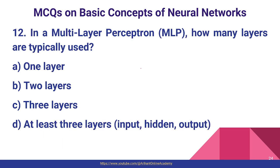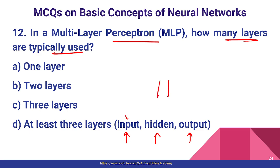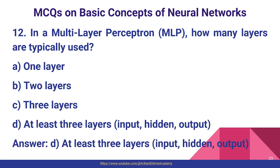Question number twelve: in a multi-layer Perceptron, how many layers are typically used? At least we require an input layer, a hidden layer, and an output layer — at least three layers. We may also have multiple hidden layers, but at minimum one of each is required. Option D is the correct answer.